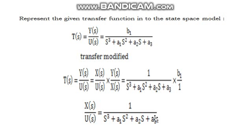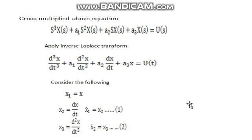So on the left-hand side we have two parts: one is X(s)/U(s), and another is Y(s)/X(s). On the right-hand side, one part is 1/(s³ + a1·s² + a2·s + a3), and another is b1. By equating these, X(s)/U(s) = 1/(s³ + a1·s² + a2·s + a3). Cross-multiplying: s³·X(s) + a1·s²·X(s) + a2·s·X(s) + a3·X(s) = U(s).